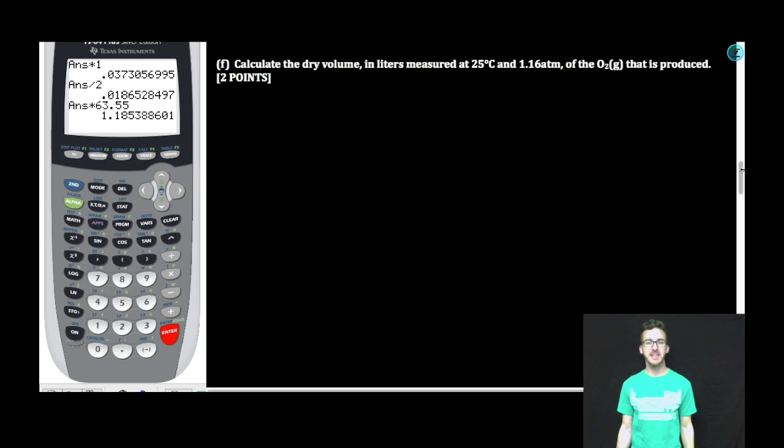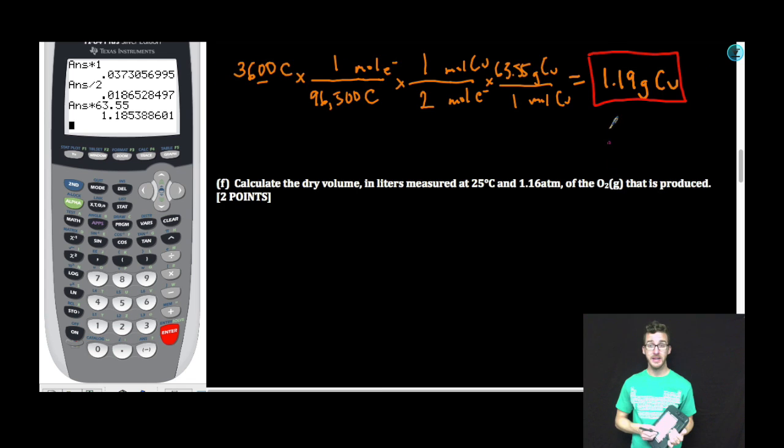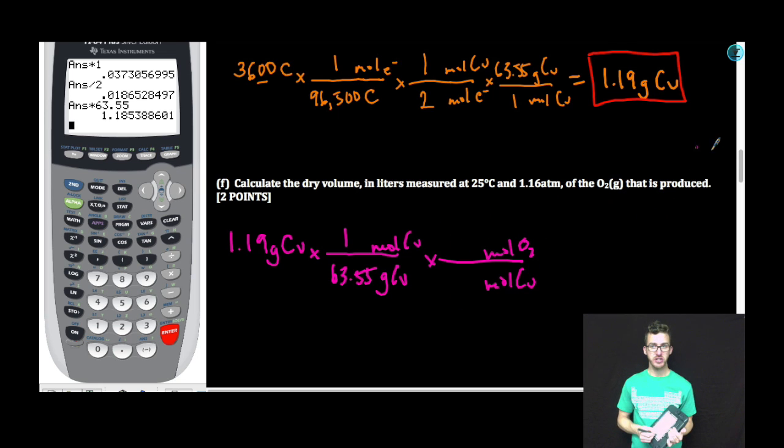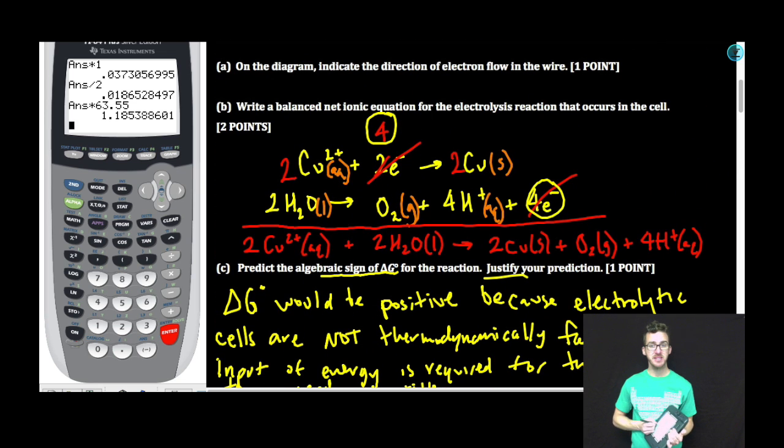All right, one more part here. It says calculate the dry volume in liters measured at 25 degrees Celsius and 1.16 atmospheres of the oxygen gas that is produced. At this point, you should be jumping for joy because you've worked through this really long problem and they're just asking to do stoichiometry. Again, from the earlier question, we realized that we've produced 1.19 grams of copper. Let's convert our grams of copper back to moles. And then we need to compare our moles of copper to moles of oxygen gas generated.